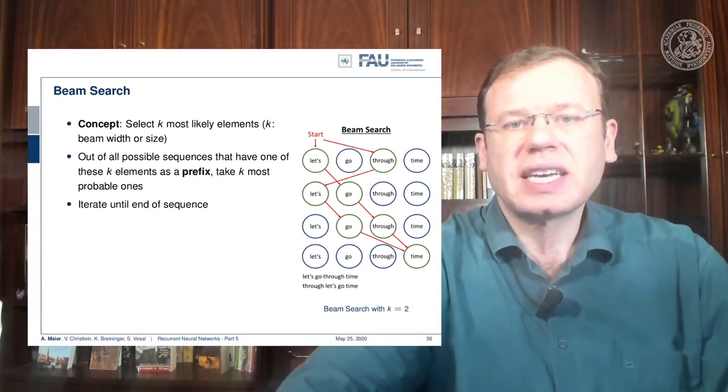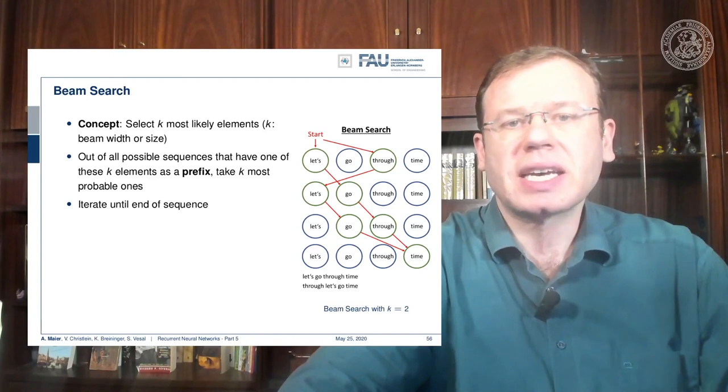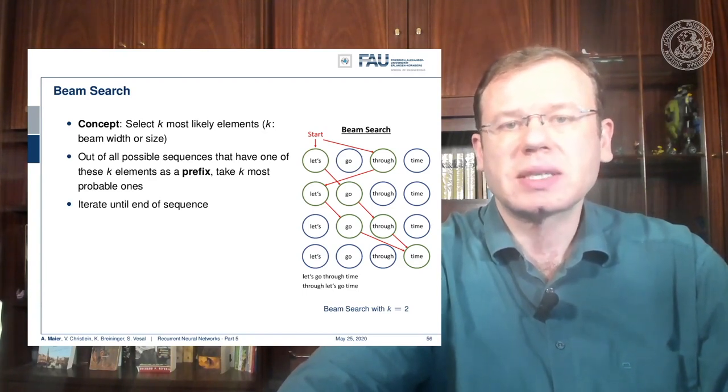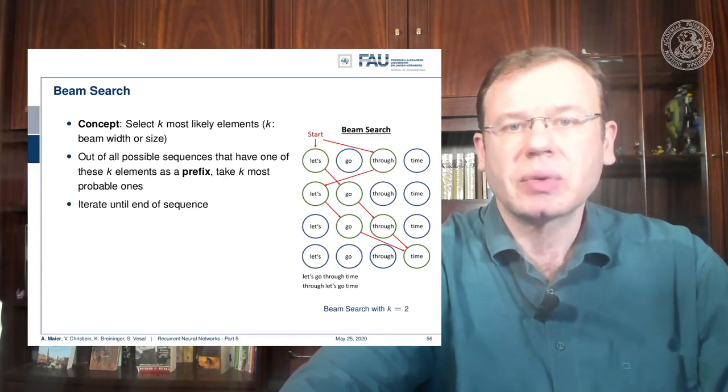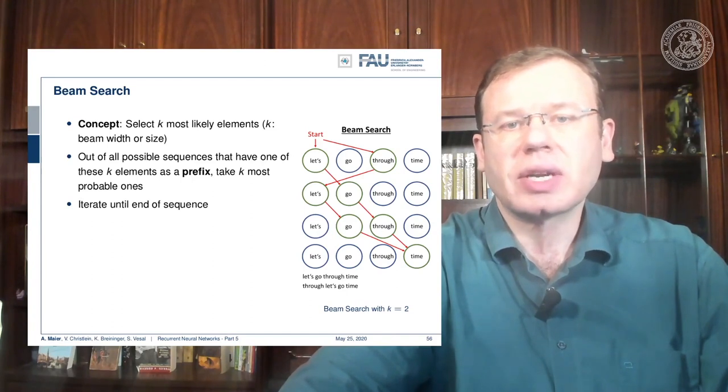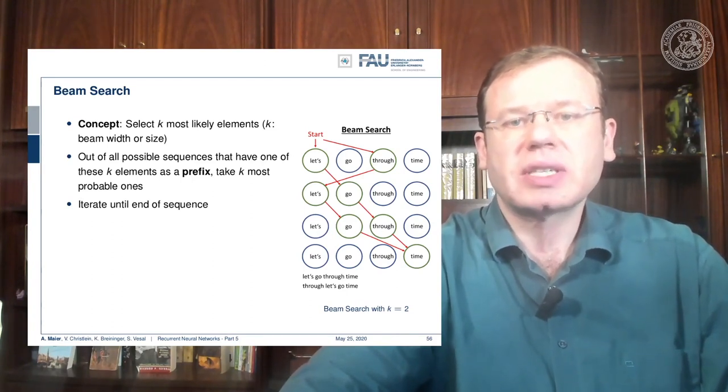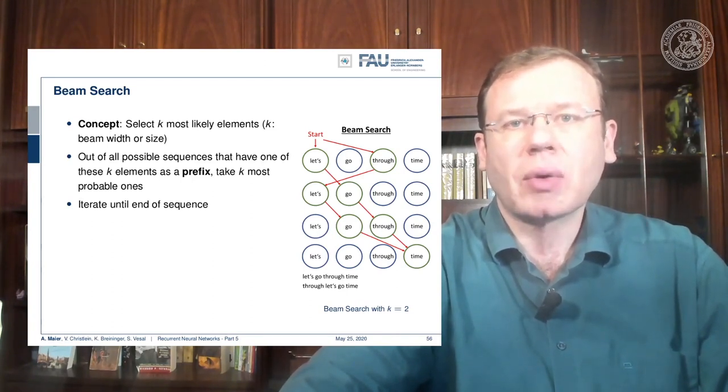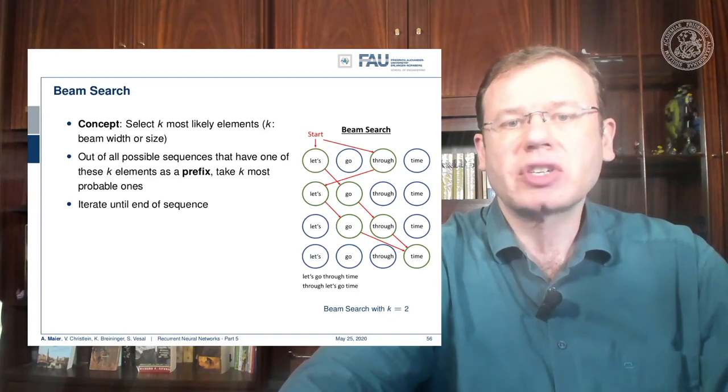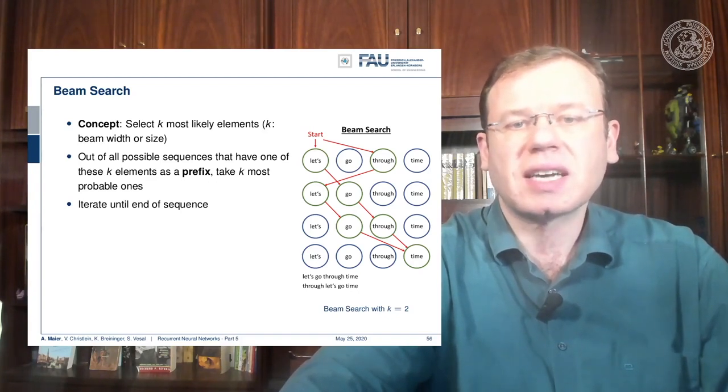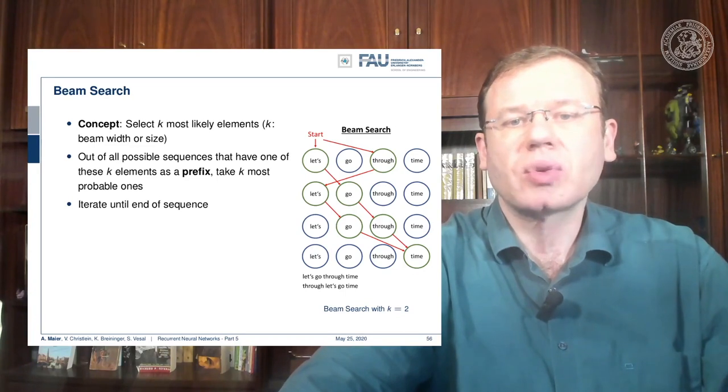In the example that we show here on the right hand side, we start with the empty word and then we take the two most likely ones which would be 'let's' and 'through.' Then we generate 'let's' as the next one, and if we take 'let's' we generate 'go,' and we can continue this process.